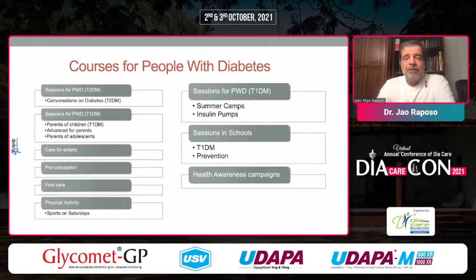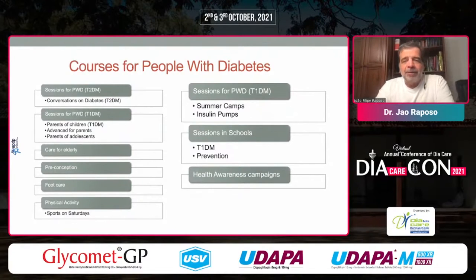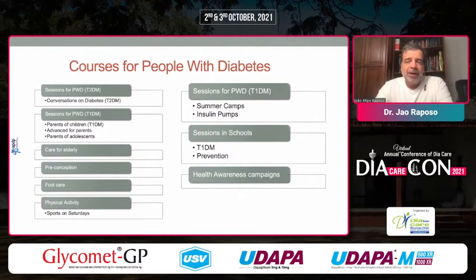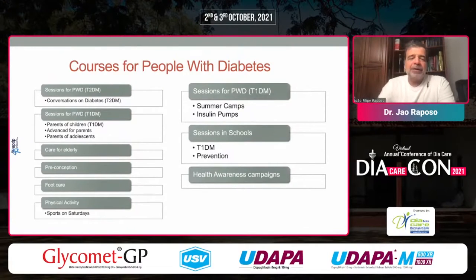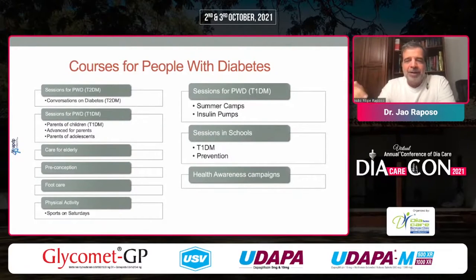Education is also provided for people with diabetes, and we have to take care of everyone's needs. We have sessions covering type 2 diabetes, sessions for parents of children with type 1 diabetes, sessions for parents of adolescents, care of the elderly, preconception, foot care, physical activity, summer camps for children and elderly people, sessions for insulin pump users, school sessions, and health awareness campaigns. Those were face-to-face before COVID, but even during the pandemic we provided education through webinars and Zoom classes in every possible way.